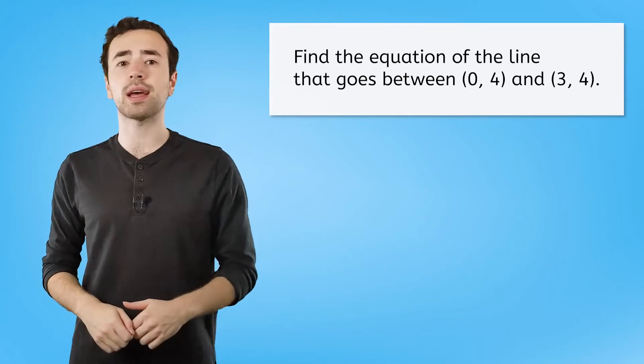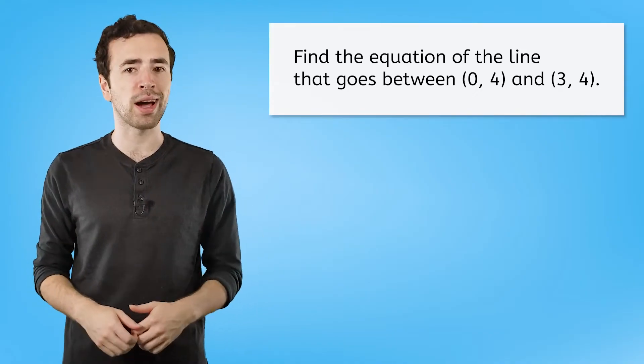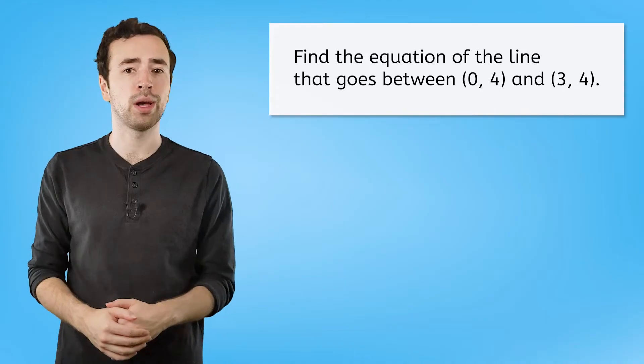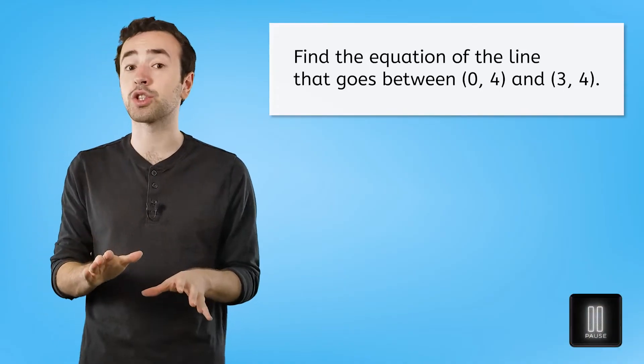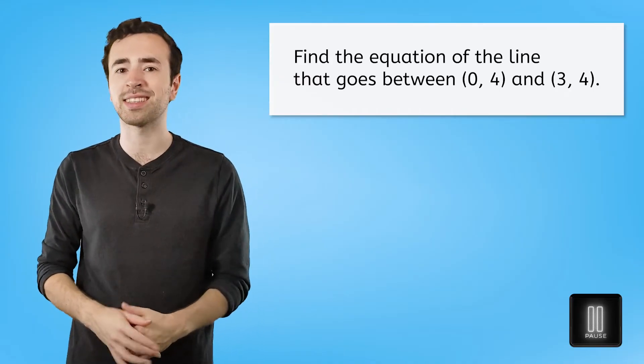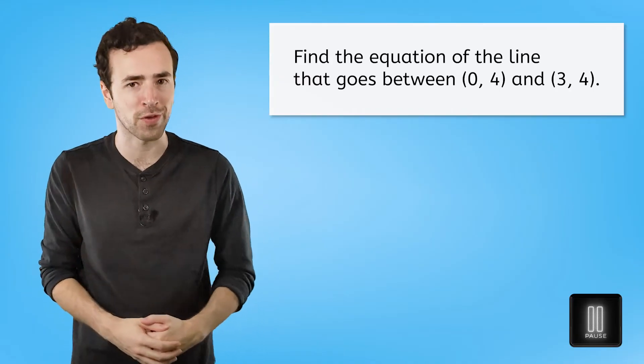Before we talk together about horizontal and vertical lines, there's a discovery problem in your guide of notes for you to complete that asks you to find the equation of the line that goes between 0 comma 4 and 3 comma 4. Go ahead and pause this video here to try this problem on your own, using everything you've learned about writing the equations of lines in slope-intercept form so far.